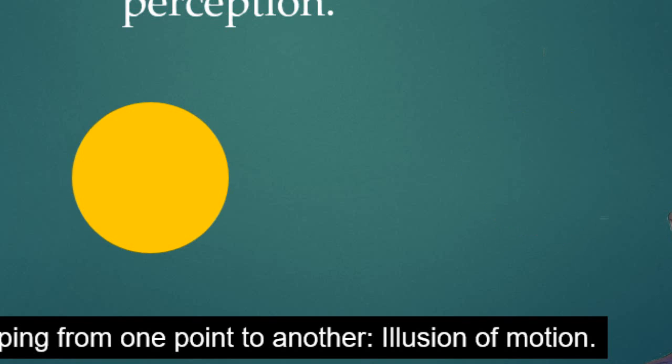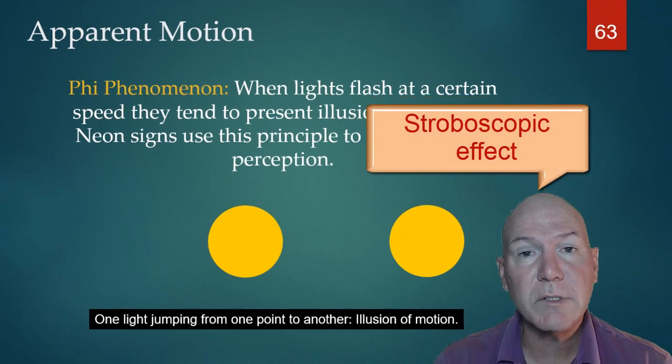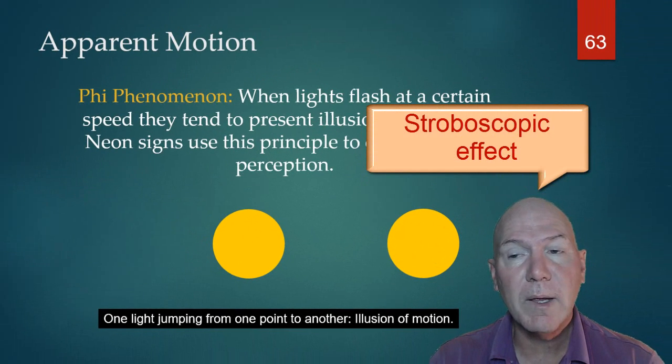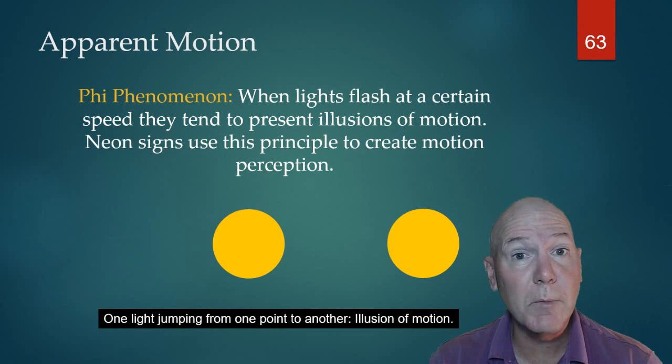It creates a sensation of movement, sort of like the school sign that scrolls, or even movies. It's called a stroboscopic effect when the film frames, which move at I think 0.24 seconds, one right after the other, are really still photos, but it creates apparent motion. That's how we can enjoy movies.